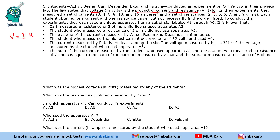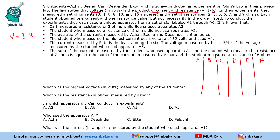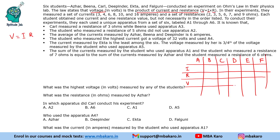These are the 6 students — let us make a table. The students are A, B, C, D, E and F (using their initial letters). We have columns for current, resistance, and voltage (V = I × R). We will get the voltage from the given options, and we also have the apparatus each student used.